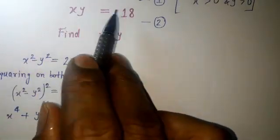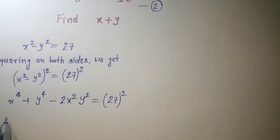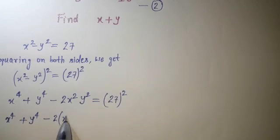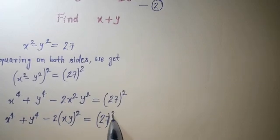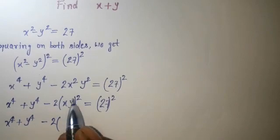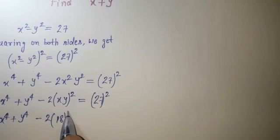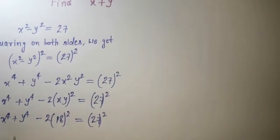We have the value xy equals 18 from equation 2. So I can rewrite this as x to the power 4 plus y to the power 4 minus 2(xy) squared equals 27 squared. Substituting xy equals 18, we get x to the power 4 plus y to the power 4 minus 2 times 18 squared equals 27 squared.